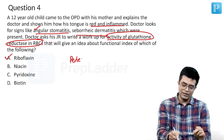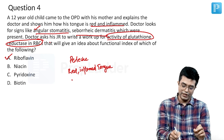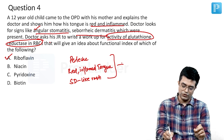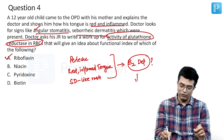Secondly, the child is having a red inflamed tongue. Thirdly, the child is having a seborrheic dermatitis-like rash on the scalp. So, you should suspect B2 deficiency — that is riboflavin deficiency — in these patients.